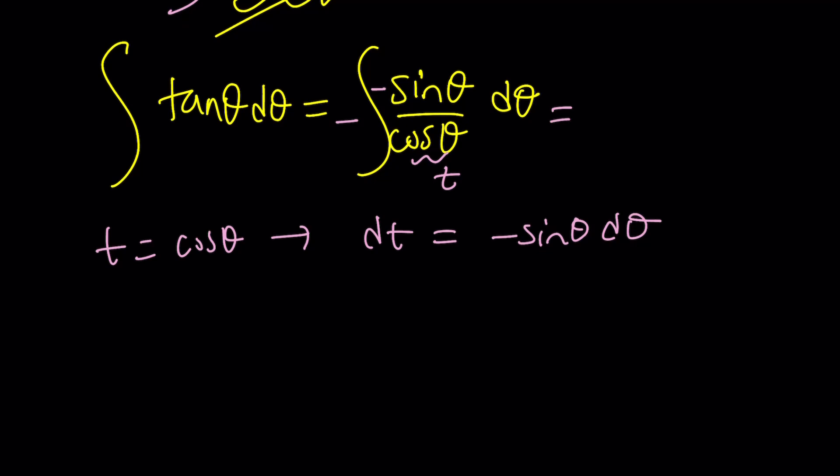This is negative. Negative sine theta d theta is going to be dt, dt divided by t. But that's just ln with a negative sign. Negative ln t plus c. But what is t? t is cosine theta. So, it's just going to be negative ln cosine theta.